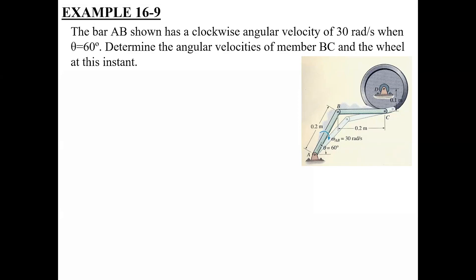Reading the statement of this problem, let us first try to understand the motion of these links — what possible motion exists. Can you identify the number of moving rigid bodies? We have three rigid links in motion. Starting with link AB: link AB is grounded from point A, so it would be in pure rotation with respect to point A.